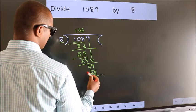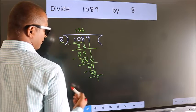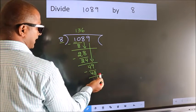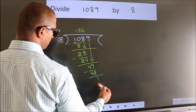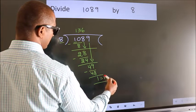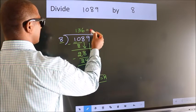Now we subtract. We get 1. No more numbers to bring it down. So we stop here. This is our remainder. This is our quotient.